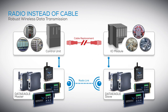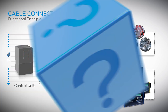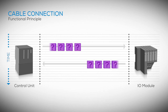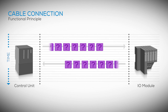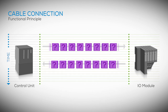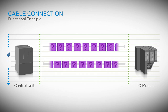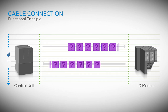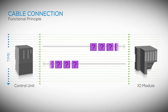Now you'll probably ask: what's the difference between a cable connection and a radio connection? With a cable connection, the data packets are sent between the control unit and the I/O module. The data transfer takes place every millisecond, almost in real time, with virtually no time lag.